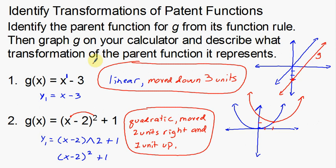That is identifying transformations of parent functions — just a couple of examples. You're going to have to have a graphing calculator to compare your old parent functions with the new G function and the new rules. You need to know what the parent functions look like and be able to graph the new ones to see the transformation.